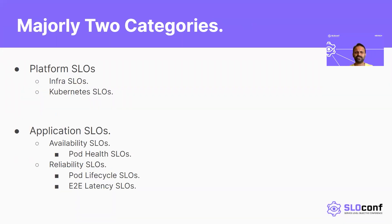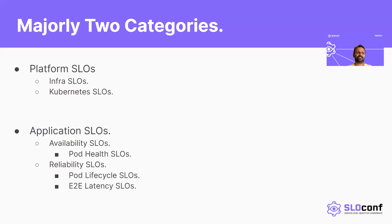I would put these into two major categories: platform SLOs and application SLOs. In platform SLOs, they are divided into two parts. One is infrastructure — network, compute, and storage. You would want to know: what is the network latency? What SLO should you have from the network or storage team? How quickly do you want to spin up a disk or how quickly does your compute work? These are the types of SLOs at the infrastructure level.